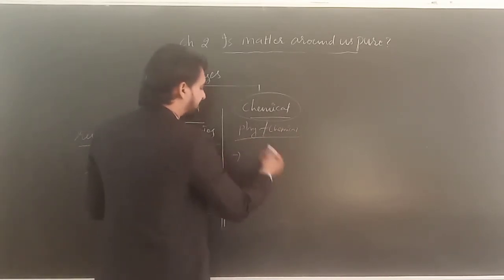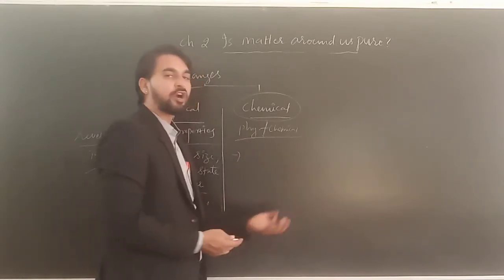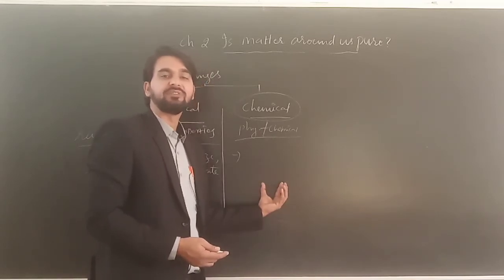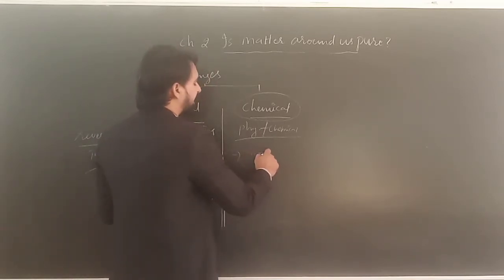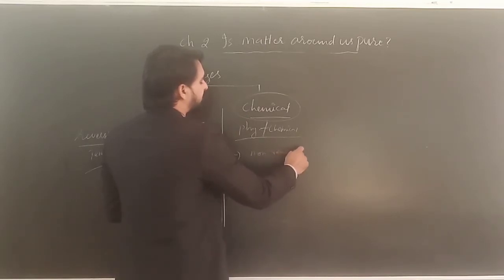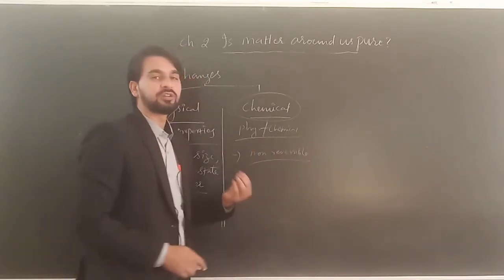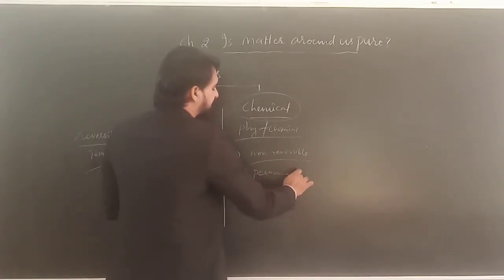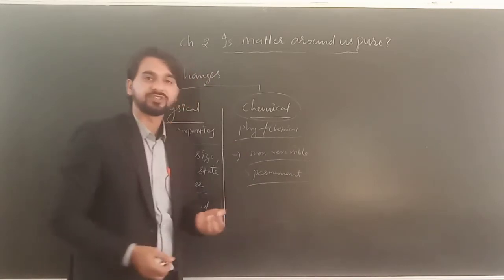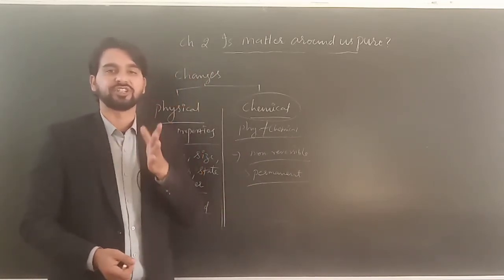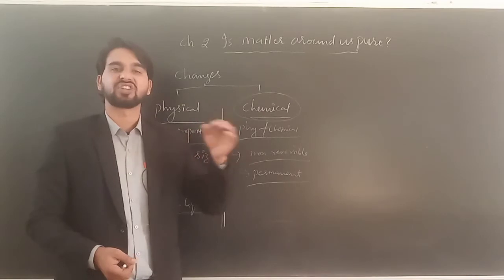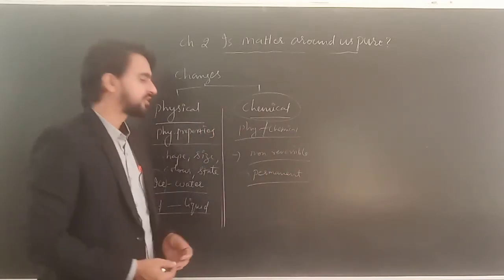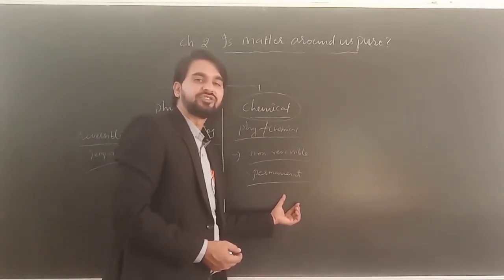In a chemical change, once the new substance is formed, it cannot be obtained back. That means it is a non-reversible change. It is a permanent change — the substance gets permanently converted into or modified into another substance.